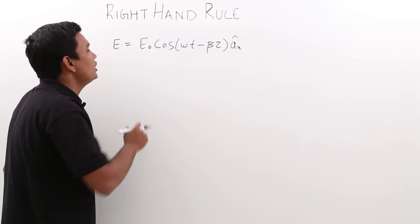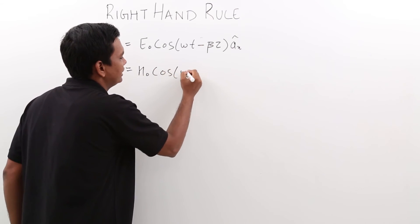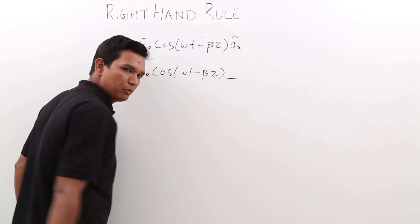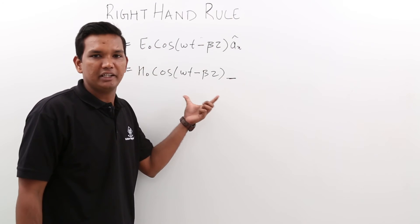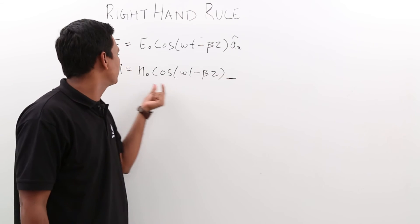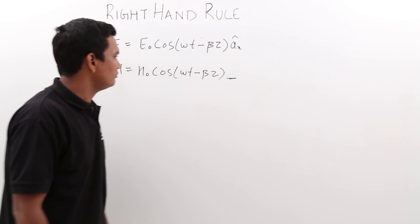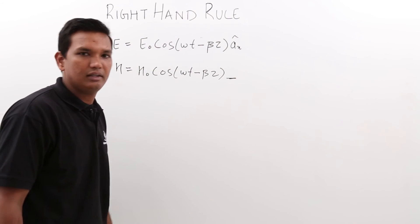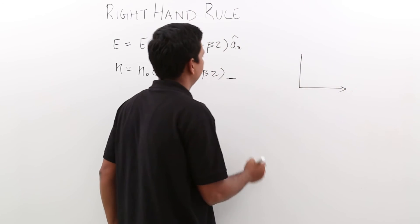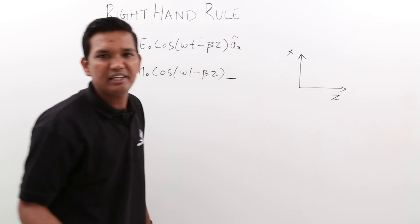Now, if I have to find what would be the direction of the magnetic field — I do not know what it would be. We can apply the Poynting theorem to find the direction of the magnetic field, because we already know the direction of propagation which is plus z, and the variation of electric field is along the plus x axis. Let me mark this as the z-axis and this as the x-axis.